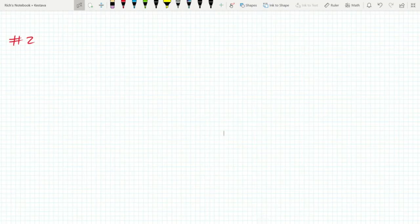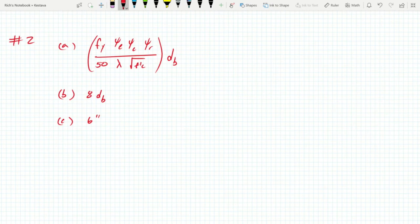So that looks like this. We have a couple factors that we need to find, but we can solve. C is already solved for, it's 6 inches. B, we can do very quickly because we know the diameter of our bar is 0.625 inches, which gets us 5 inches. Now we just need to solve for A. We need psi E, psi C, psi R, lambda. Let's jump back to the ACI.